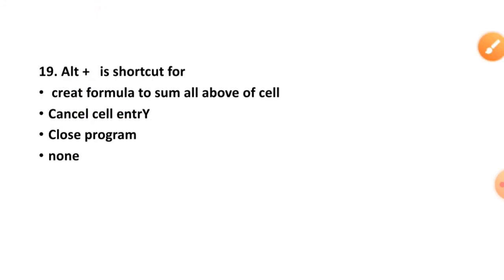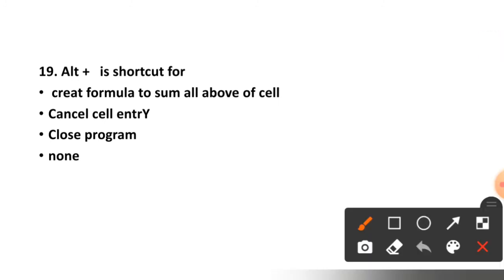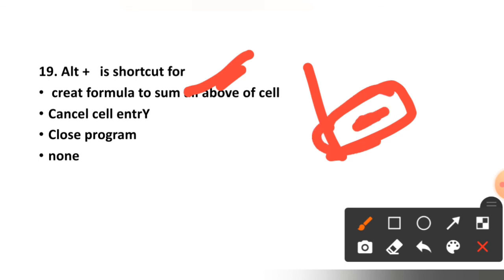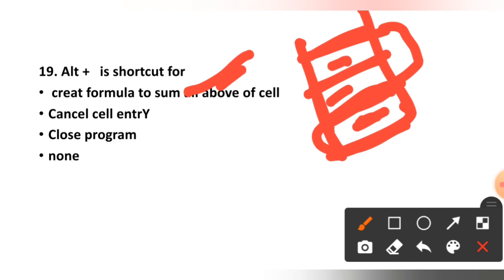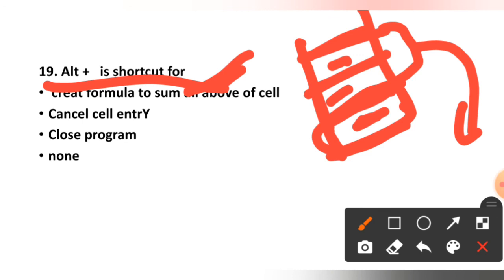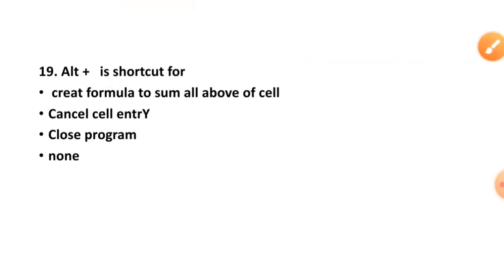Question number nineteen: Alt plus equals is a shortcut for what? Creating formula to sum all above the cell, cancel, close the program, or none? The correct option is option number one, create formula to sum above the cell. When working in Excel and the above cells contain data, pressing Alt plus equals will sum those cells.